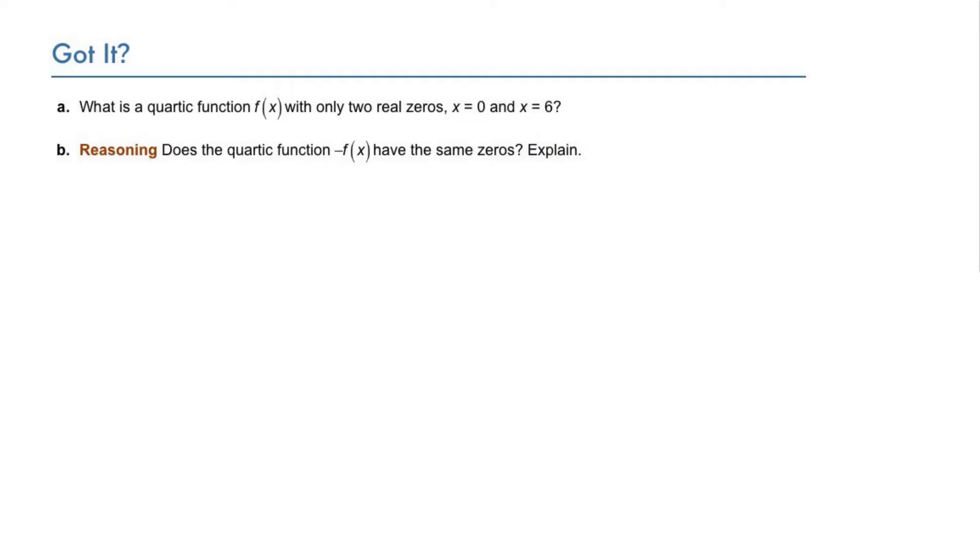Your turn. Part A: What is a quartic function f of x with only two real zeros at x equals 0 and x equals 6? And Part B, a reasoning item: Does the quartic function negative f of x have the same zeros? Explain.